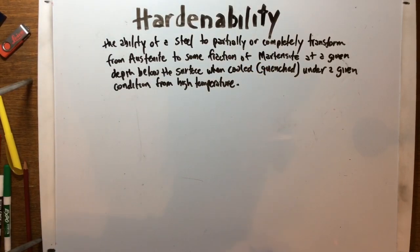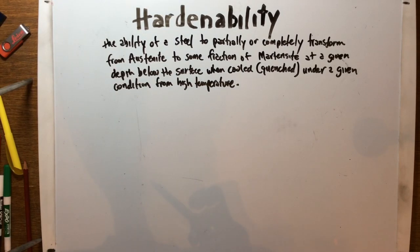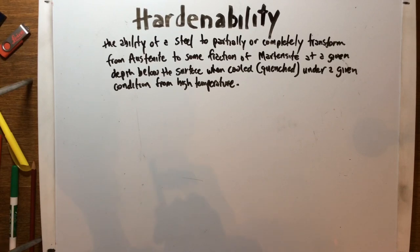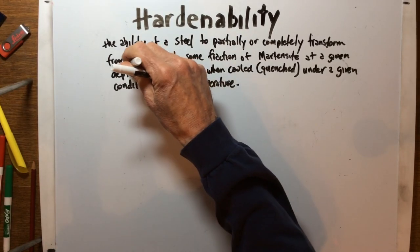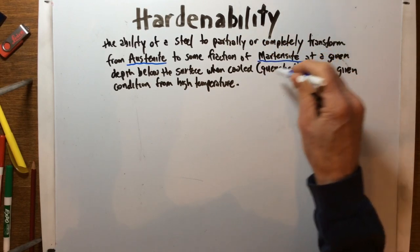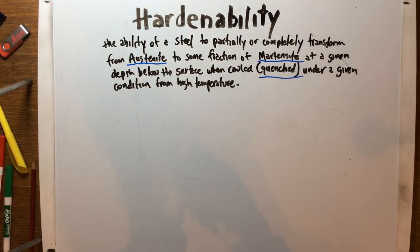So that's a really well-rounded definition. I'll summarize it in a minute, but I think we need to make a couple of points on terms within this. We need to review austenite, martensite, and quenched.